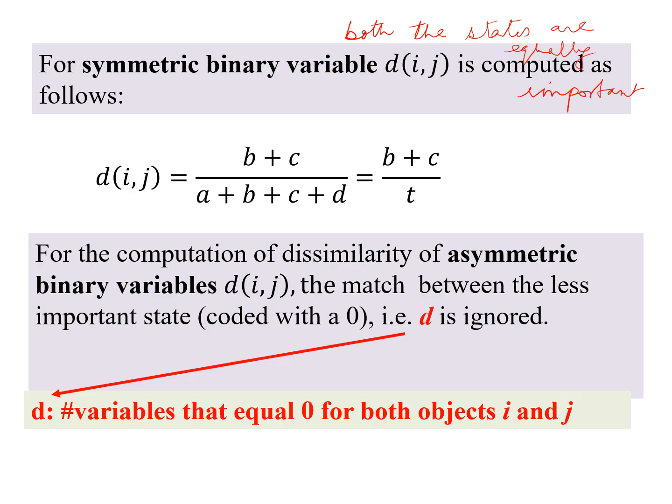the dissimilarity or distance d(i,j) is computed as b plus c divided by the entire set of variables, number of variables. So as you may note, b and c give you the number of mismatches where one of the variable is 1, the other is 0, and for the other c also. So this is how we would compute d(i,j) where our binary variable is symmetric.